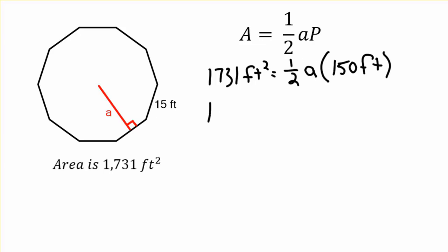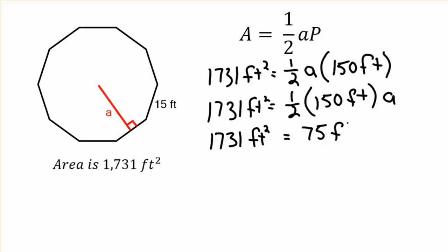So, the order doesn't matter when you multiply. I'm going to put the one-half next to the 150. I'm going to cut the 150 in half. So, one-half times 150 feet, and again, that's times a. That's the commutative property. I can move things around with multiplication. So, I cut the 150 feet in half—that becomes just 75. One-half of 150 is 75 feet times a.